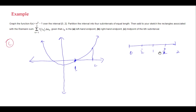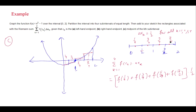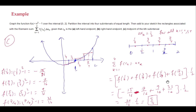Finally, we use the midpoints of each sub-interval. The midpoints of the four sub-intervals are 1/4, 3/4, 5/4, and 7/4. Drawing rectangles using these midpoints and evaluating f(x) = x² - 1 at each, we add the heights and multiply by the width 1/2. The Riemann sum using midpoints is 5/4.